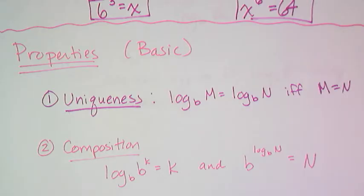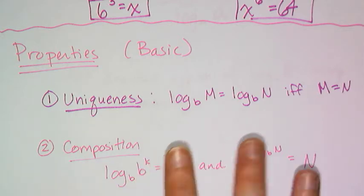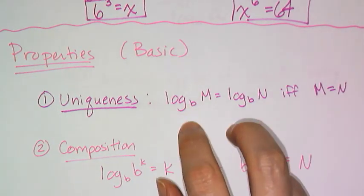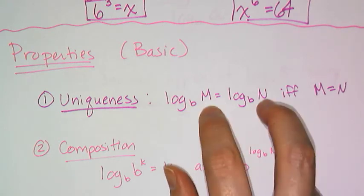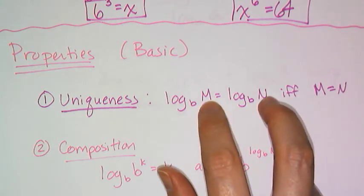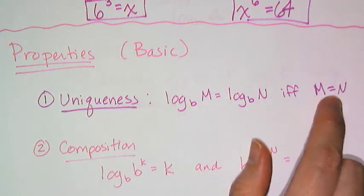Now like all operations, there are properties that govern them. The properties for logarithms are actually the same as the properties for exponents, just written in the language and notation of a logarithm instead of an exponent. Just like we have a uniqueness for exponents, we have a uniqueness for logarithms. If I have two logs of the same base, two separate values M and N, that's only true if M is equal to N.